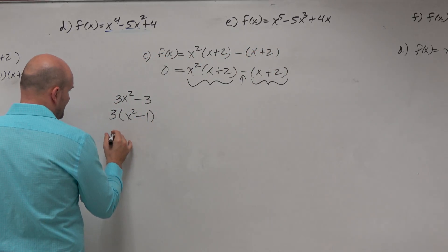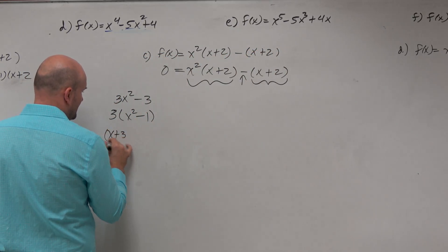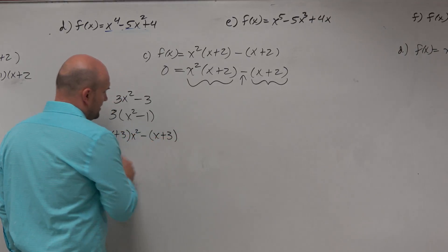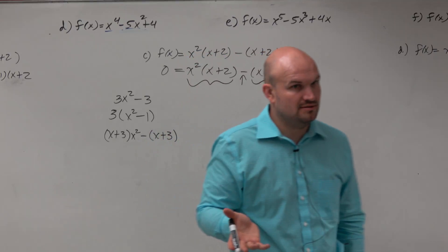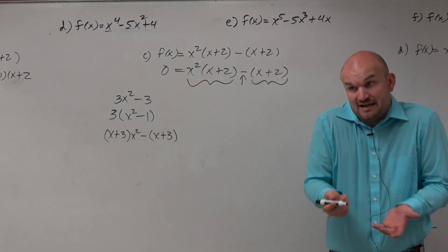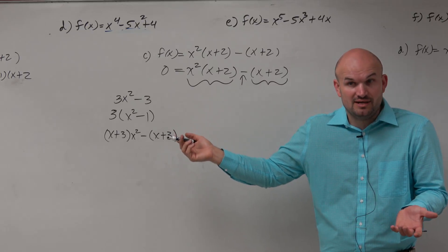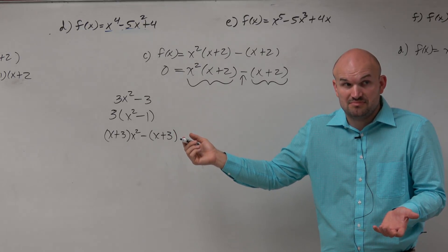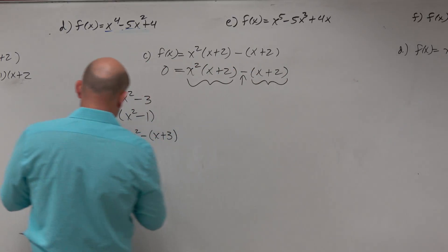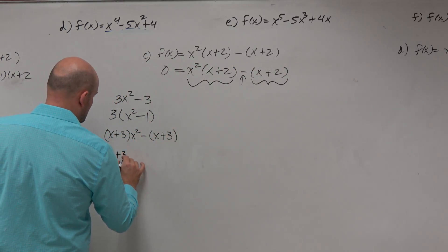So then I say, well, what if I did x plus 3 times x squared minus x plus 3? Now, what do these have in common? The x plus 3. Can I factor out the x plus 3 just like I factor out the 3? Are we breaking any rules, any laws anybody know of? I'm not aware of any. It's the same process.